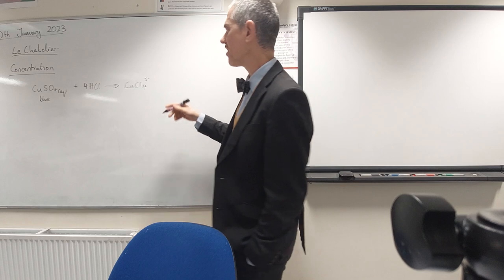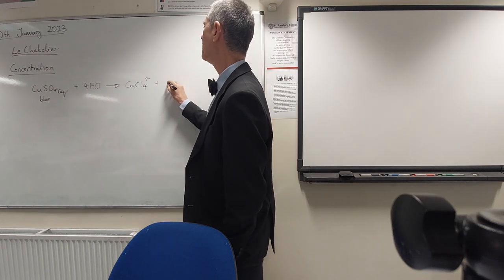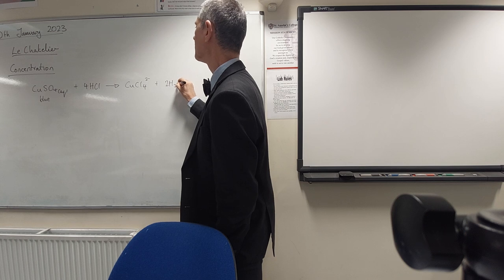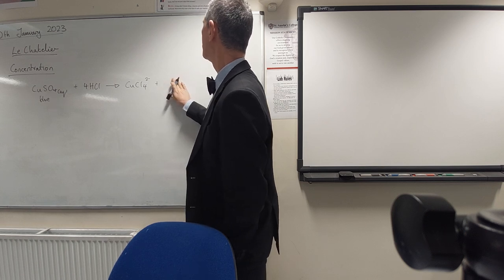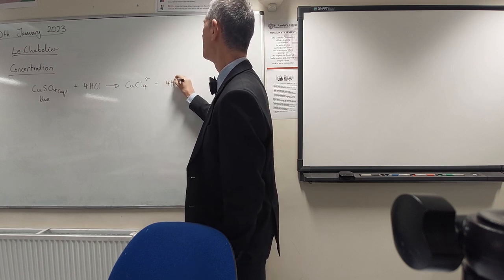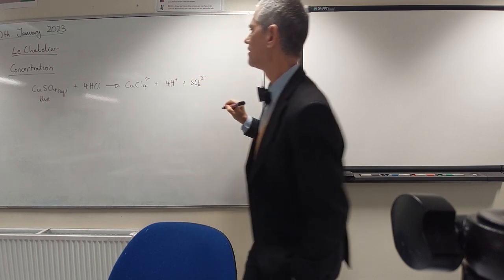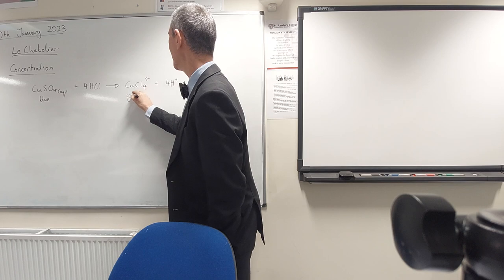Copper chloride ion, it's a bit funky. And... no, it's not right, what are we doing? 4H pluses and some sulfate. That'll do. That is yellow.